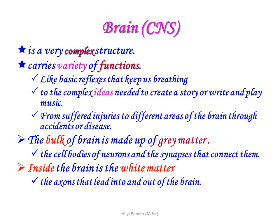The brain is a very complex structure. It carries out varied functions, from basic reflexes that keep us breathing to complex ideas needed to create stories and apply critical thinking. The back of the brain is made up of gray matter — the cell bodies of neurons — while inside the brain is white matter, which is the axons that lead into and out of the brain.